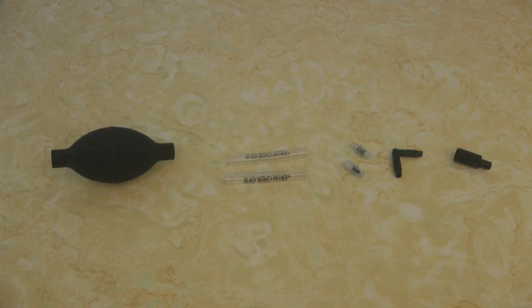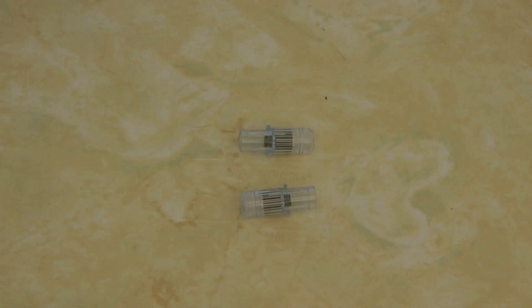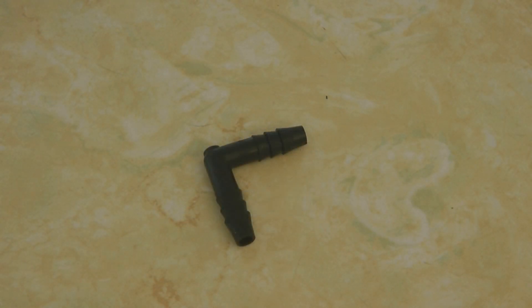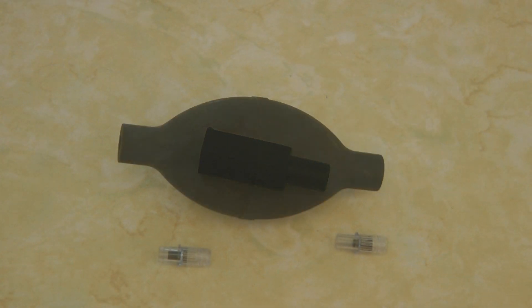First, make sure you have all the parts to your primer. You need the priming body, two pieces of tubing, two valves, an outlet elbow, and an inlet hex nut. I don't have very strong hands, so I had my daughter help me.